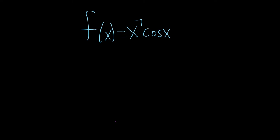Hi everyone. In this problem we're going to find the derivative. The function is x to the 7th times cosine x.